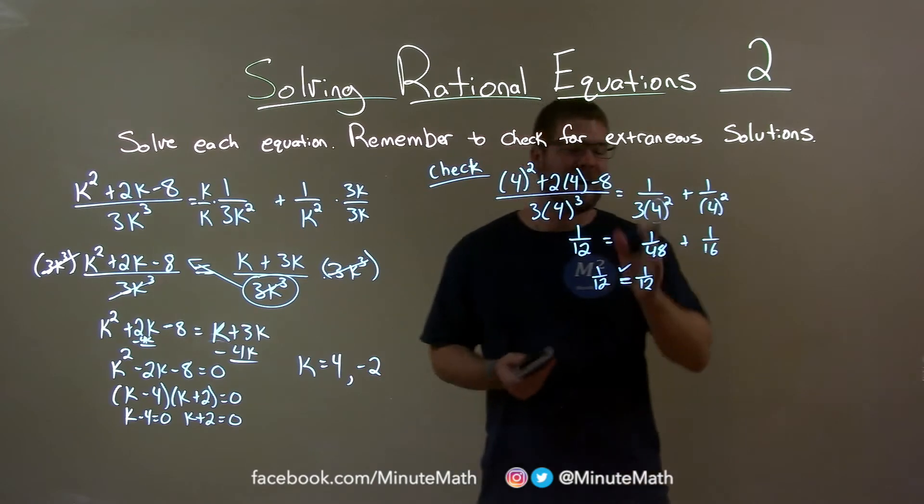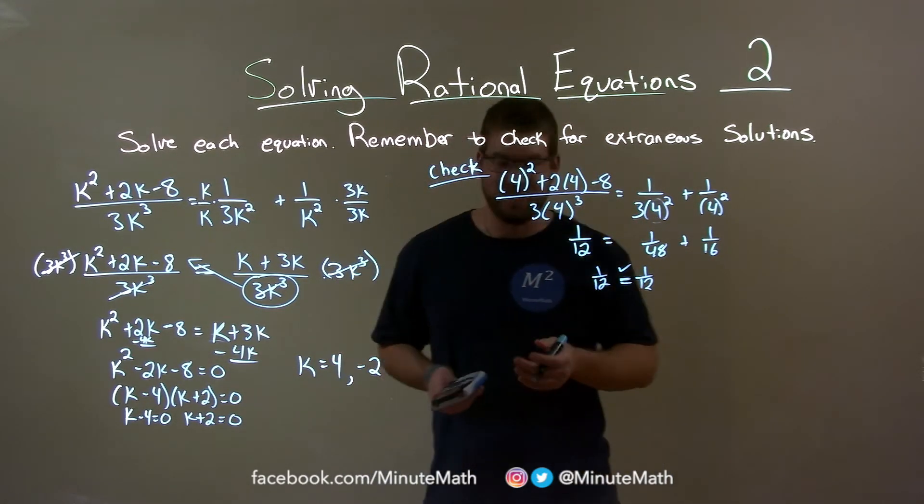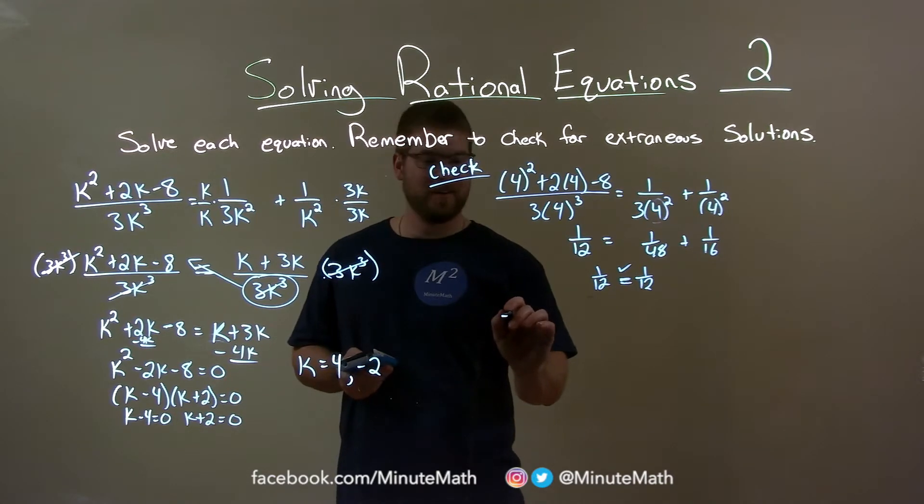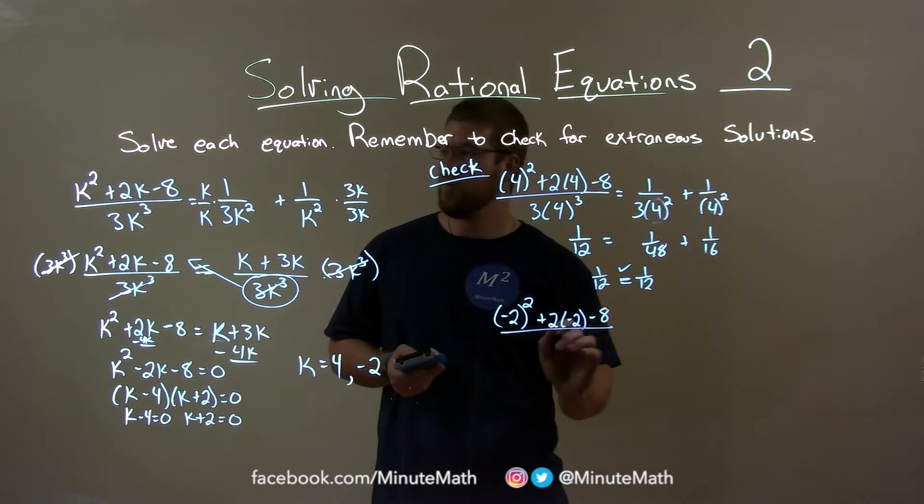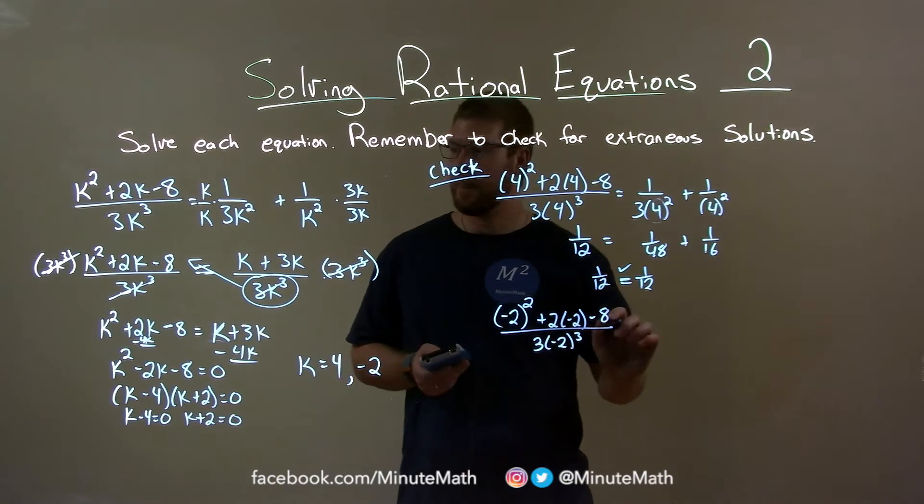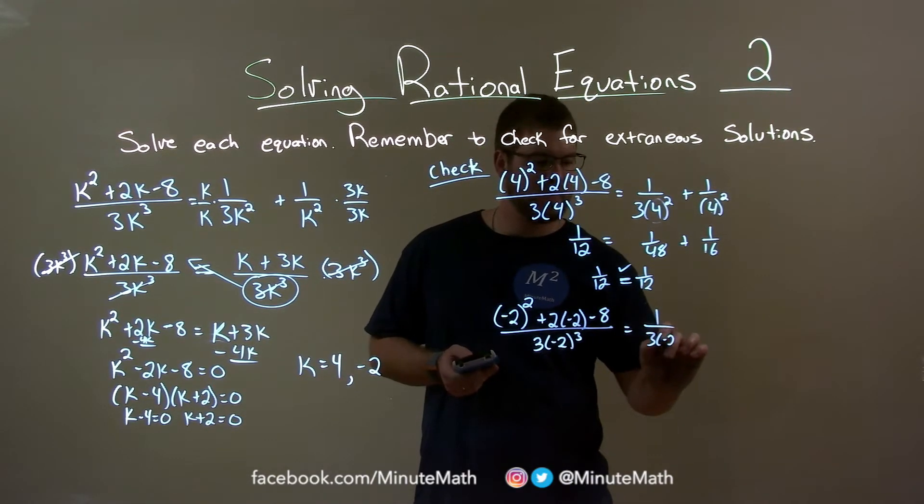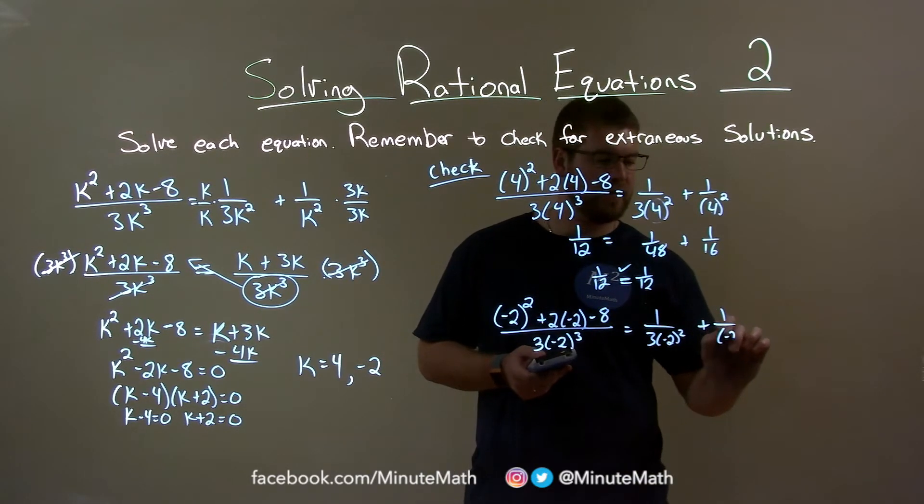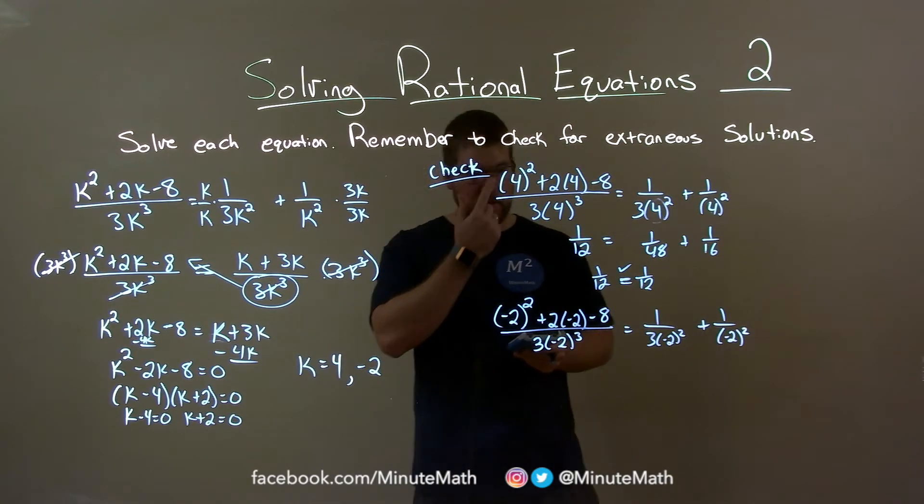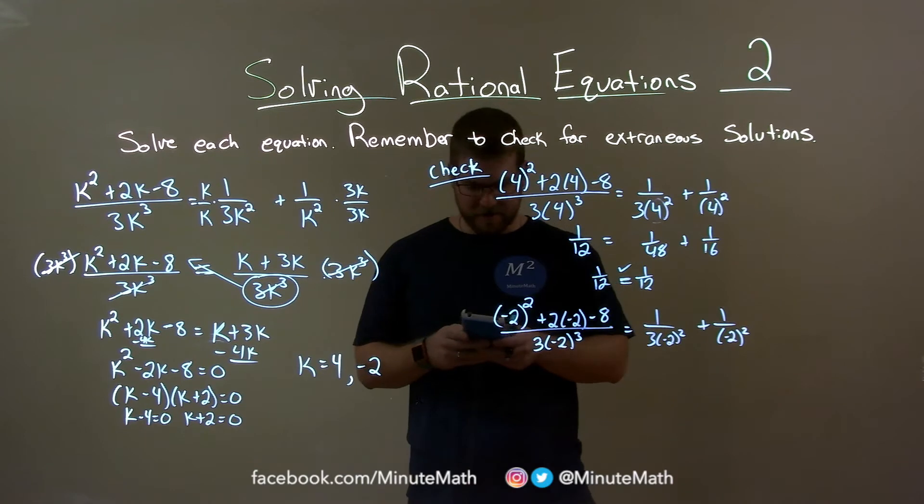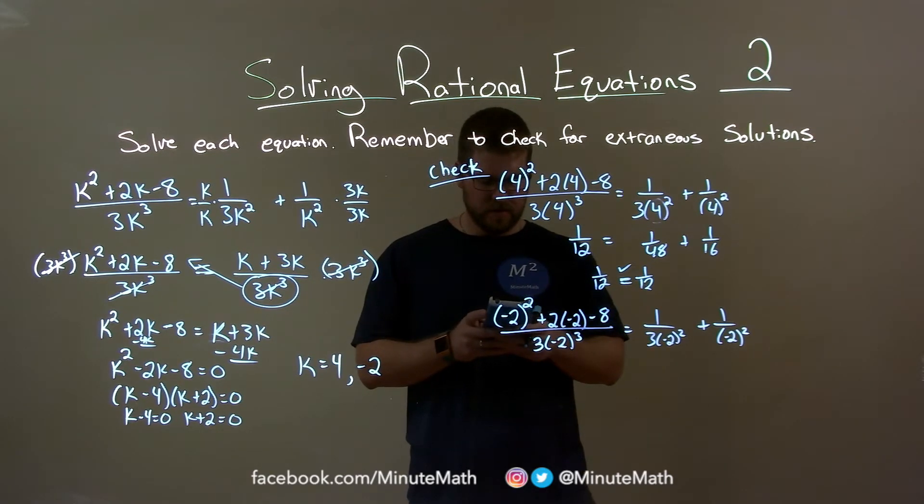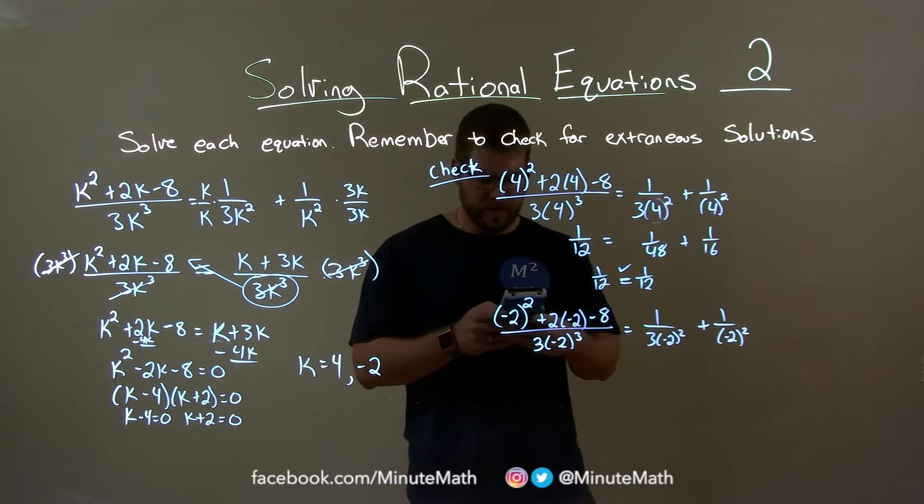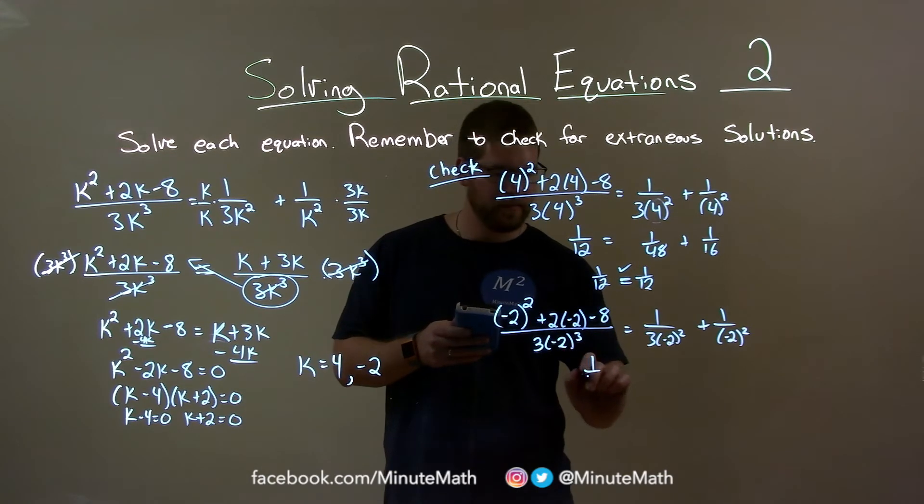Alright, now again, be careful with typing things in. It's so easy to make a mistake, as you can see. Same thing with negative 2 here. Hopefully I don't make a mistake here. Negative 2 squared plus 2 times negative 2 minus 8 over 3 times negative 2 to the third power equals 1 over 3 times negative 2 squared plus 1 over negative 2 squared. Alright, I'll type it in right. Let's go to the left fraction. Let's see if we can get this done pretty quickly. Negative 2 squared plus 2 times negative 2 minus 8, and we're dividing that by 3 times negative 2 to the third power. And that fraction here is just good old 1 third.